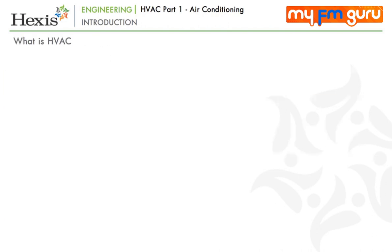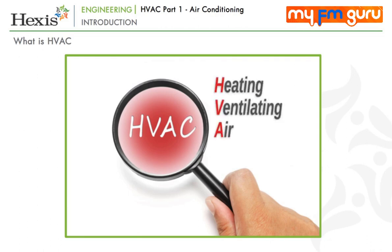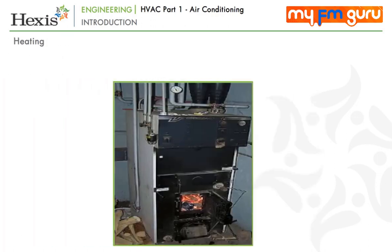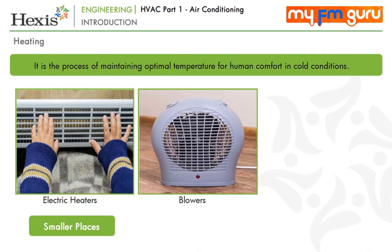Now that you have an understanding of what HVAC systems are, let us take a closer look at each element individually — namely, heating systems, ventilation systems, and air conditioning or cooling systems. The H in HVAC stands for heating. It refers to the process of maintaining optimal temperature for human comfort in cold conditions. In smaller spaces such as houses and rooms, electric heaters and hot air blowers are used. Larger places require a central heating plant comprising generation of heat and its distribution in the facility.